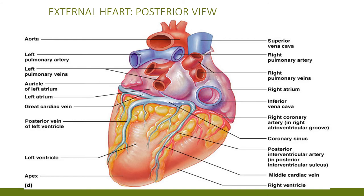This is the posterior of the heart. You can see the apex of the heart on the left. Here are the four pulmonary veins coming into the left atrium, the inferior vena cava coming into the right atrium, superior vena cava coming into the right atrium, and the coronary sinus going into the right atrium. The great cardiac vein forms and at the end becomes the coronary sinus. Here you see the right coronary artery coming around and the circumflex artery coming around on the left.